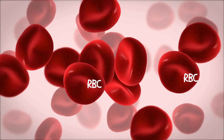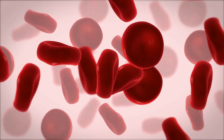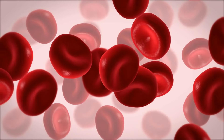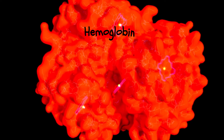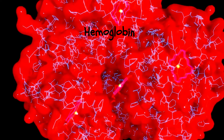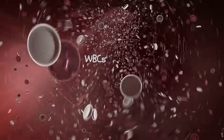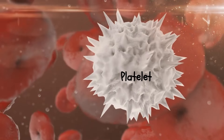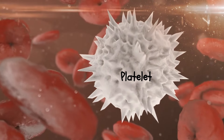Red blood cells, making up about 45 percent of the total blood volume, are the body's primary means of oxygen transport. They contain hemoglobin, which gives blood its characteristic red color and is essential for carrying oxygen to cells throughout the body. White blood cells serve as the immune system's soldiers, actively fighting off infections and diseases to keep the body healthy. Platelets play a critical role in blood clotting, a process that prevents excessive bleeding during injuries.